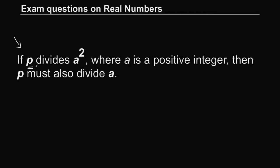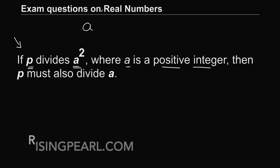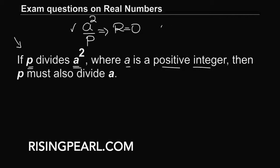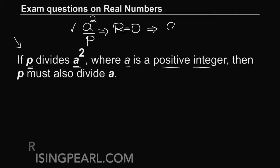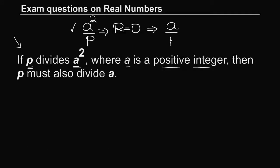The theorem goes like this: if P divides A squared — where A is any positive integer — meaning A squared is divisible by P with remainder 0, then it automatically means that A must also be divisible by P. So if A squared is divisible by P, it automatically means A is divisible by P, or in other words, A has P as one of its factors.